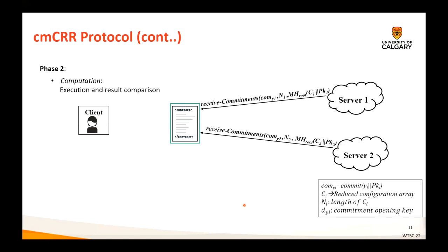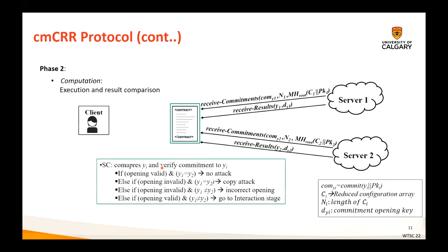When the smart contract receives the accept message from both servers, it notifies them to start the computation. Both servers perform the computation and reveal the result in two steps. In the first step, they make a commitment to the result and send the commitment to the smart contract along with the total number of intermediate computation states and a Merkle root constructed on these intermediate computation steps. In the second step, once both commitments are received, each server reveals its result Y and the opening value for the commitment TY.